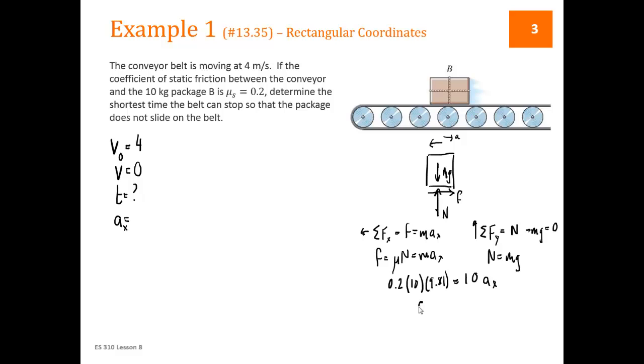So we can find acceleration in the x direction of 1.962, which is negative, because positive is to the left. We drew our acceleration to the right. That would make f negative as well. Alright, so now our acceleration over here on the kinematic side is 1.962.